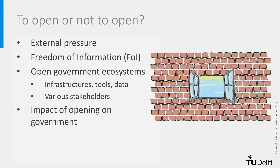To understand the challenges of open government, we have to understand what is going on. There is significant pressure to create openness, transparency and accountability, which originates from outside institutions: non-governmental organizations (NGOs), foundations, the media, and civil society. Their efforts are often linked to the freedom of information. Realizing those objectives requires an ecosystem in which stakeholders interact with each other and can use the infrastructure and tools for creating an open government.